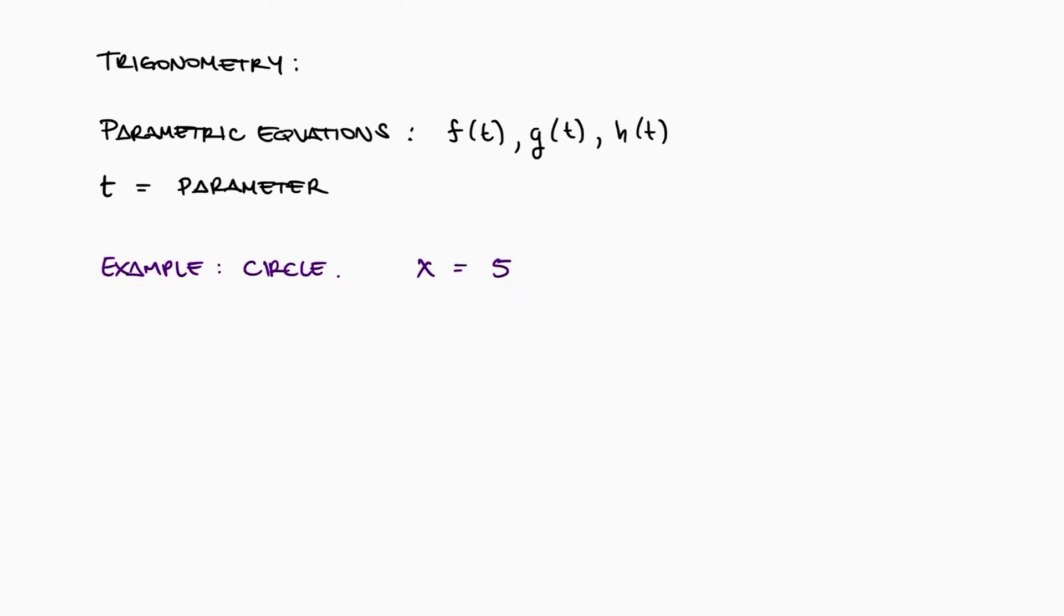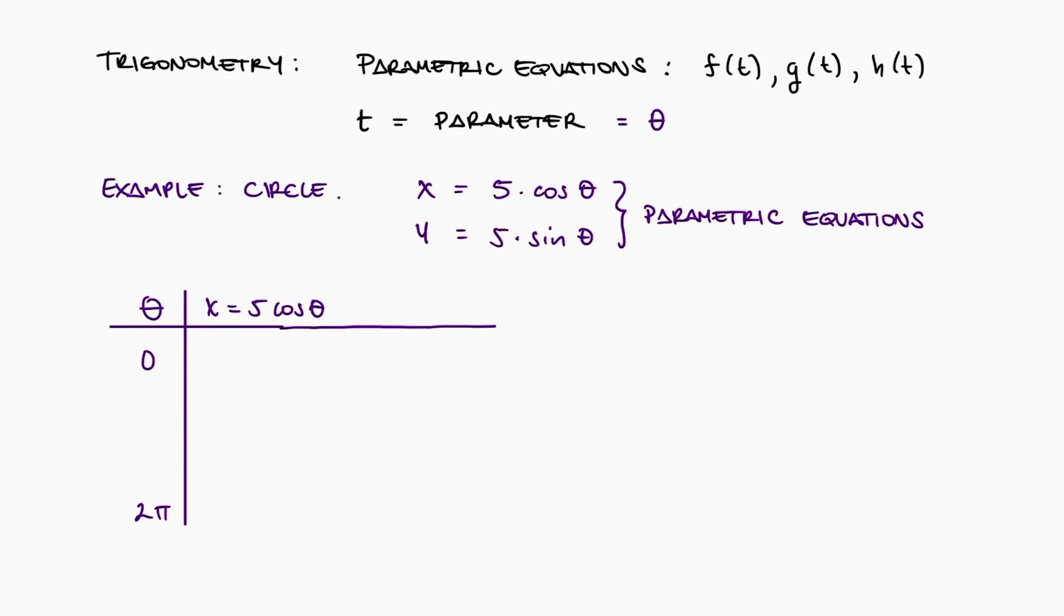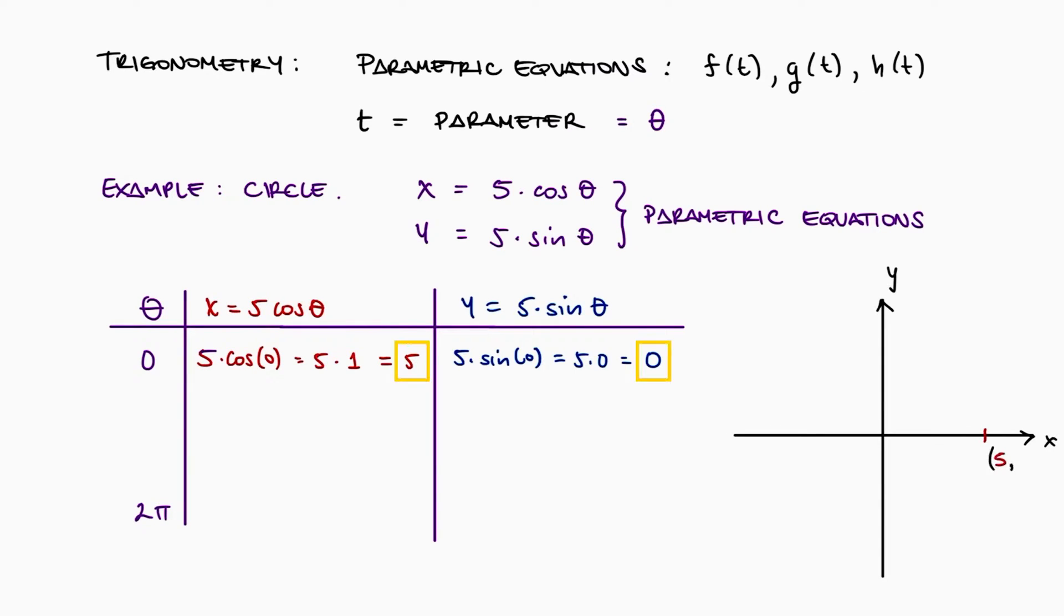If x is equal to 5 cosine of an angle theta and y is 5 sine of theta, we can vary the angle, which is the parameter in this example, from 0 to 2π, or 0 to 360 if you're using degrees instead of radians, to evaluate both parametric equations at different angles. If theta is 0, x would be 5 times cosine of 0, which is 1, meaning x is 5, and y would be 5 times sine of 0, which is 0, and therefore y is 0. The xy coordinate for the point we would plot would be (5, 0).